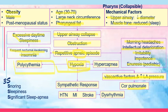Because of hypoxia, there will be sympathetic response activation — everything will be increased. Hence, the patient has risk for hypertension, risk for myocardial infarction, risk for stroke, and secondarily dysrhythmias. The 3 S's of obstructive sleep apnea are snoring, sleepiness, and significant sleep apnea. The main problem in this condition is upper airway collapse leading to obstruction and then repetitive apnea episodes.